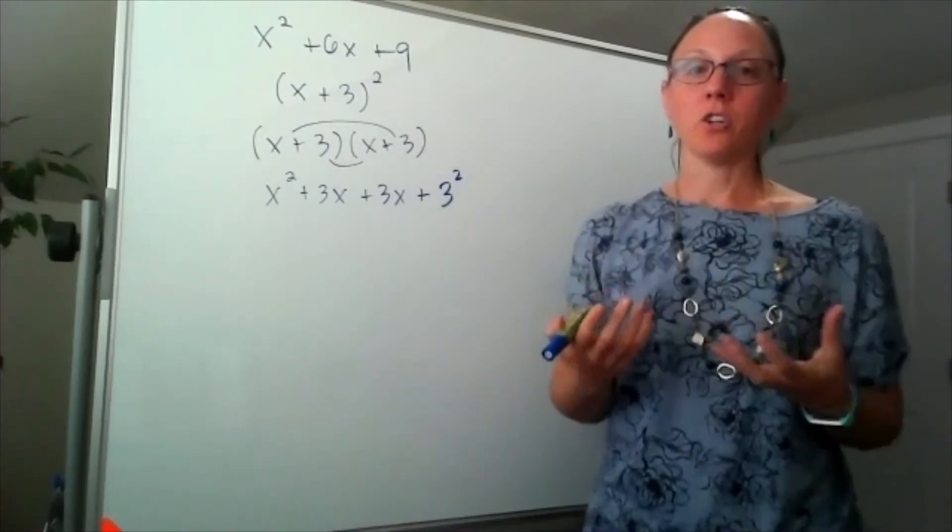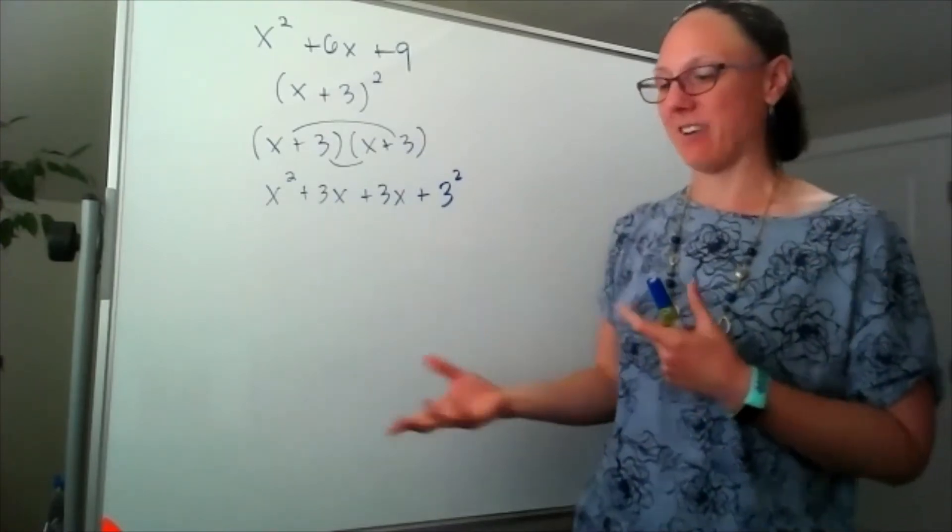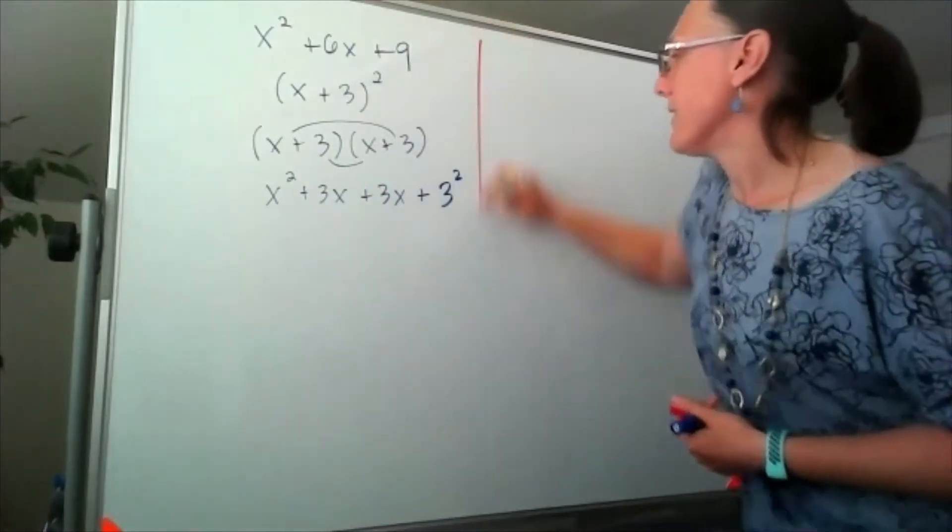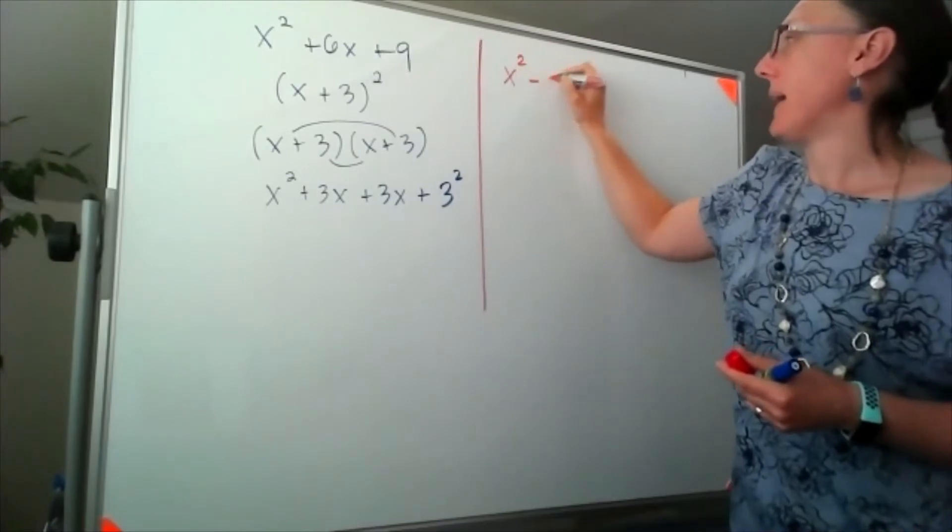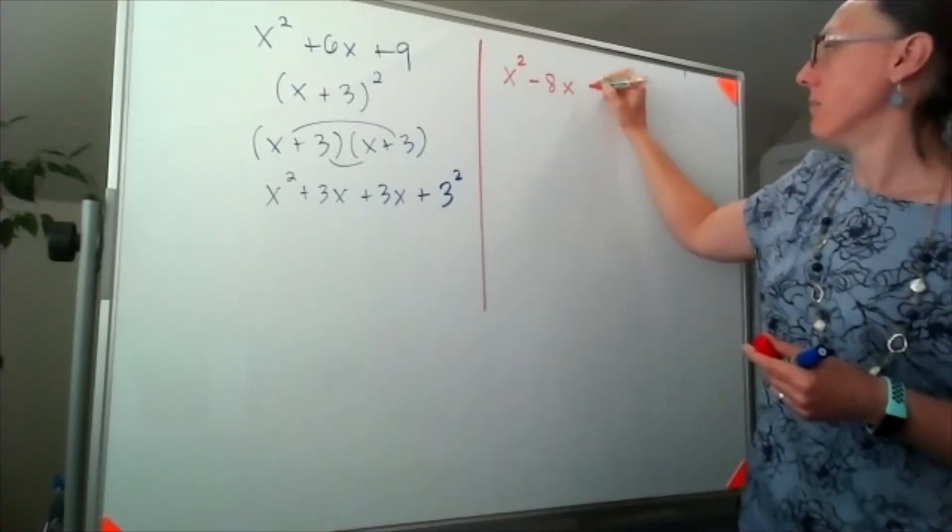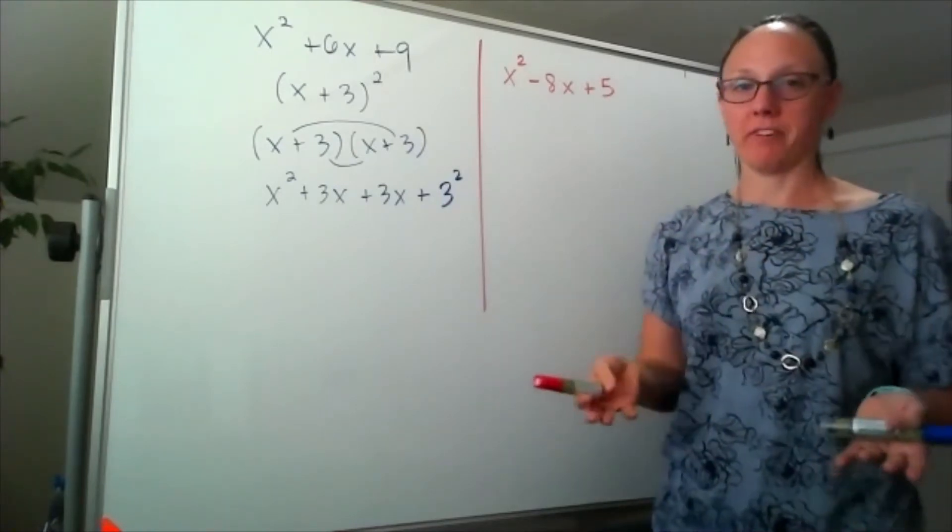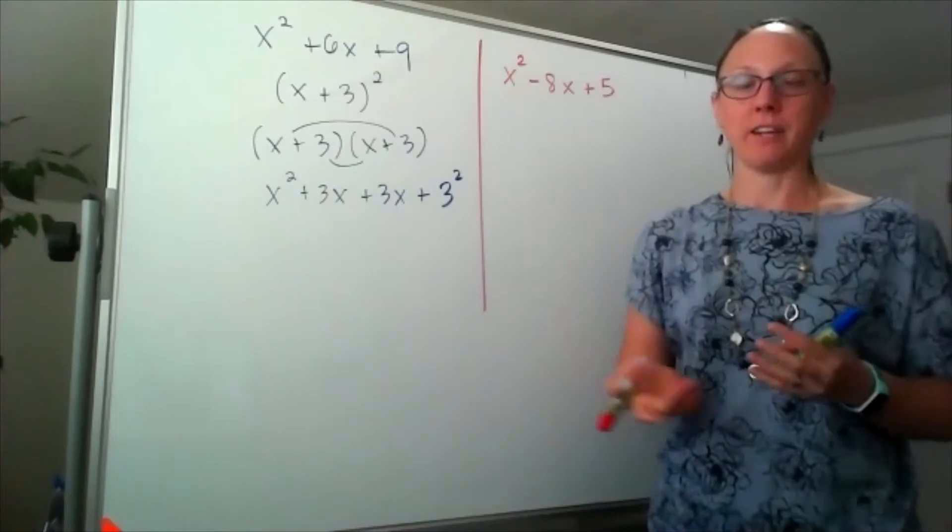So when we're trying to complete the square, we're using this idea kind of in reverse. So if I had something that looked like x squared minus 8x plus 5, well, that is not a perfect square, but I'd like it to be. That's the idea of completing the square.